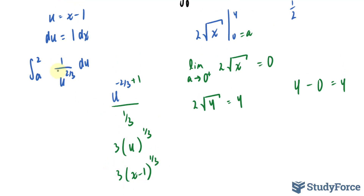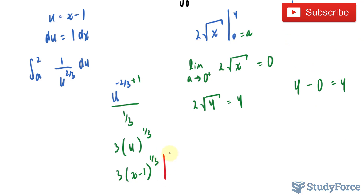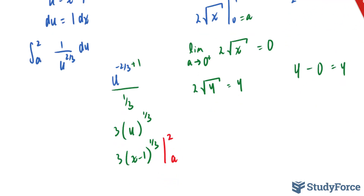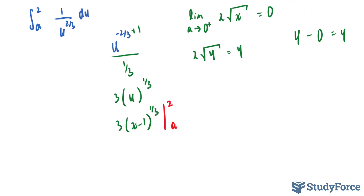This represents the integral of our original function. As before, I'll evaluate this at the upper bound and the lower bound a. The upper bound shouldn't give us any problems — substituting two into x gives two minus one to the power of one over three, which equals one, so this becomes three. At a, instead of substituting directly, I'll take the limit as a approaches one from the positive end.